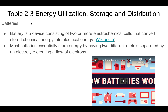This is a continuation of topic 2.3, and we're going to be talking about batteries. Essentially, a battery is a storage of electrical energy in a chemical form — the stored chemical energy is being converted into electrical energy. Most batteries work by having two different metals separated by an electrolyte, and that creates the flow of electrons, which is what electricity is. This video will give you a good understanding of how batteries work, so go ahead and watch that now and then come back.